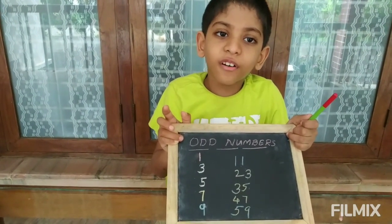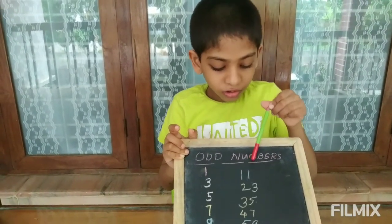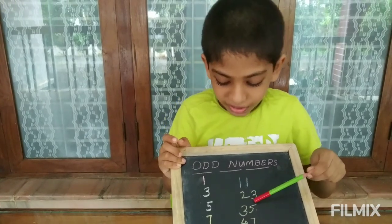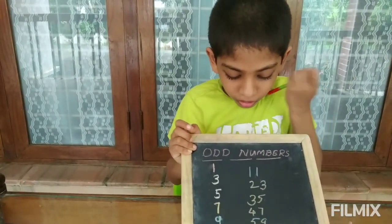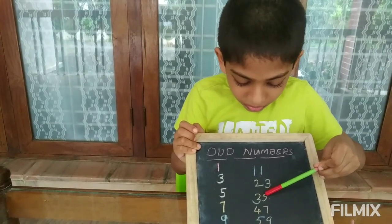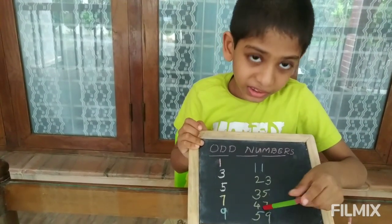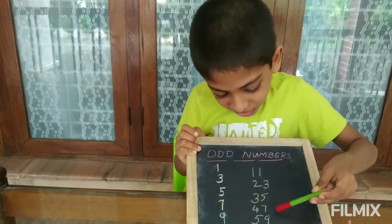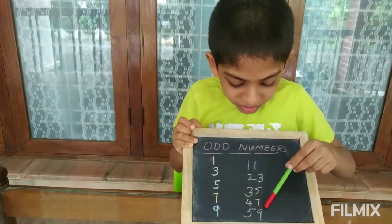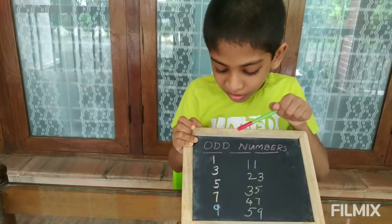Now I am showing some examples. If one is in the one's place, it is an odd number. Twenty-three — three is in the one's place, so it is an odd number. Thirty-five — five is in the one's place, so it is an odd number. Forty-seven — seven is in the one's place, so it is an odd number. Fifty-nine — nine is in the one's place, so it is an odd number.